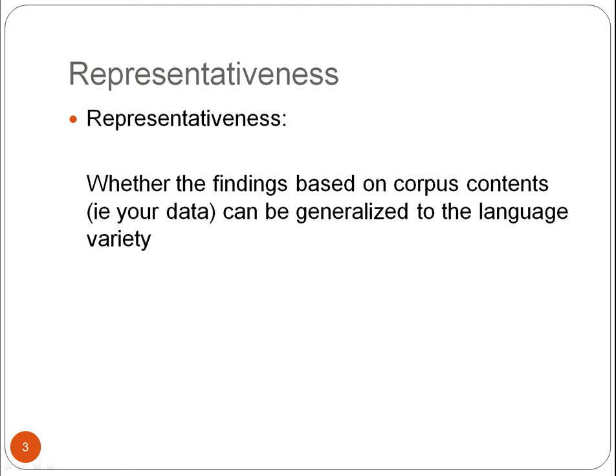For example, let's say you have a corpus that consists of news reports in the Sydney Morning Herald. Is this corpus representative of news reports in general? If we discover certain linguistic features in this corpus, can we say that we are likely to find the same linguistic features in all news reports? In this case, the answer would be no. The corpus of Sydney Morning Herald news reports is only representative of Sydney Morning Herald news reports, not all news reports.